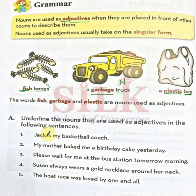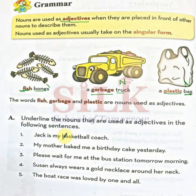Number one: Jack is my basketball coach. Jack jo hai, woh mera basketball coach hai. Kya yahan par koi word aisa hai jo Jack ko describe kar raha hai? No. Basketball coach — 'basketball' kisko describe kar raha hai? Coach ko describe kar raha hai. Toh yahan par 'basketball' jo hai, woh adjective hoga — underline the basketball, kyunke woh coach ko describe kar raha hai. Coach is noun.